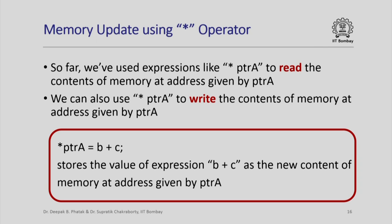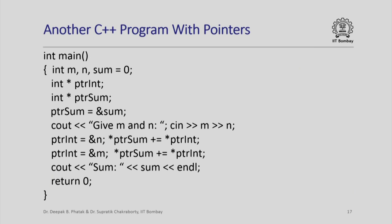So far we have used expressions like star pointer_a to read the contents of memory at the address given by pointer_a. It turns out that C++ also allows us to use star pointer_a on the left-hand side to write the contents of memory at that address. So if we have an assignment like star pointer_a = b + c, it calculates b + c and stores that value as the new content of the memory at the address given by pointer_a — basically updating that memory location.